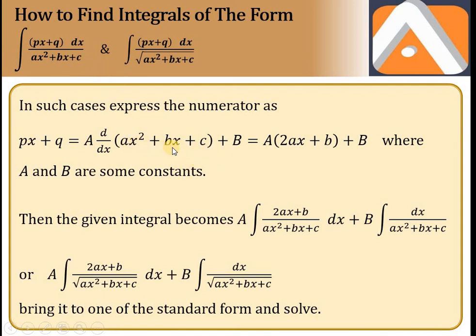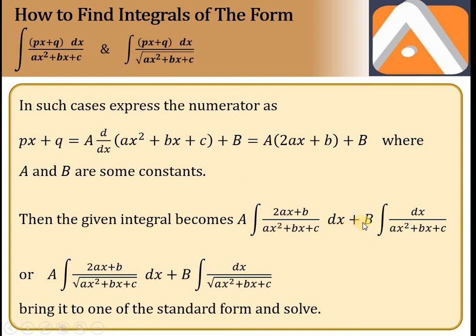We compare coefficients to find the values of A and B. Capital A equals P divided by 2a, and capital B is found by comparing constants. Once we have A and B values, the numerator splits into A times the derivative of the denominator plus B, and we integrate each part separately — either over the quadratic or over the square root of the quadratic.